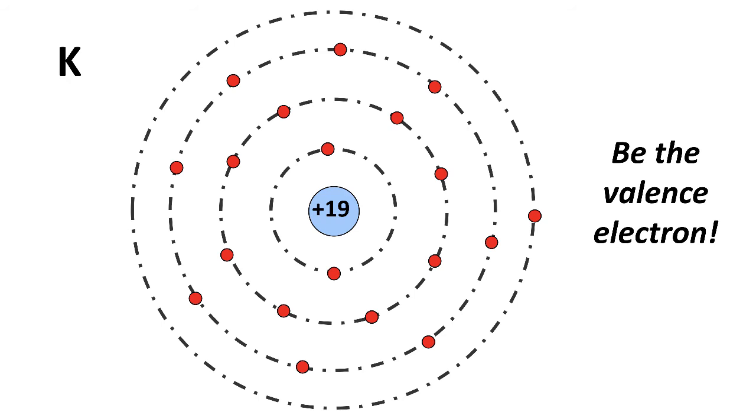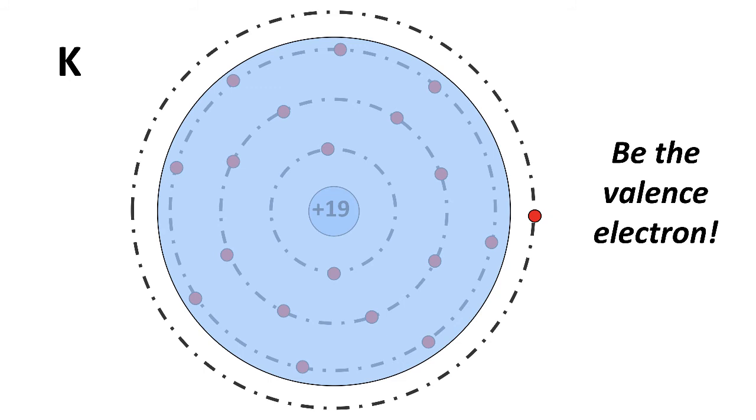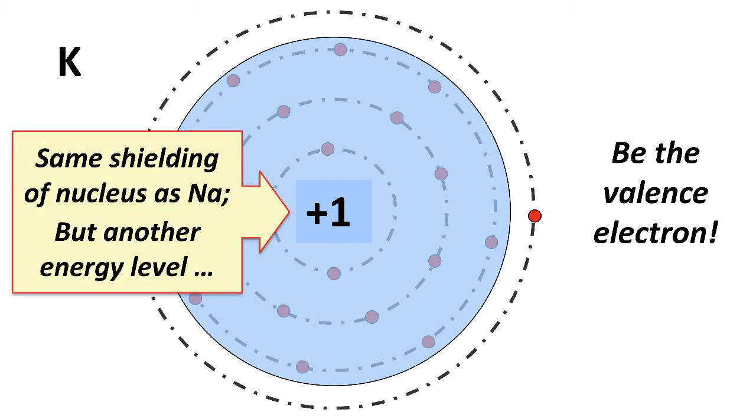What if we move down to potassium? Potassium has 19 protons and it's got 2 plus 8 plus another 8 for the third shell. So it's actually got 18 inner shell electrons. What we have is a plus 19 due to the nucleus, minus 18 due to the inner shell. That gives us once again an effective nuclear charge of about 1. Same idea as in sodium, same shielding of nucleus, but another energy level.